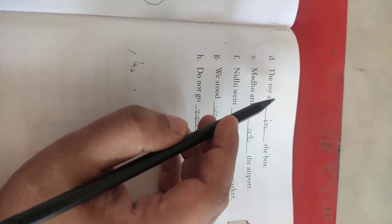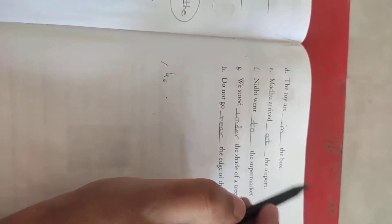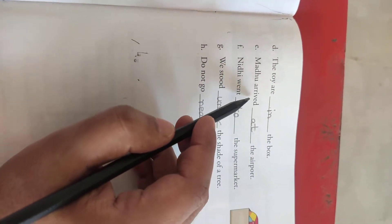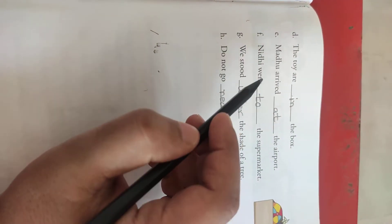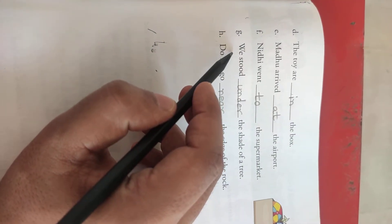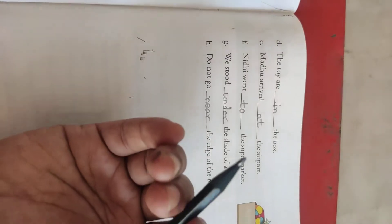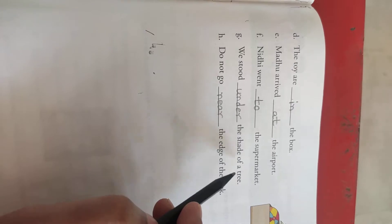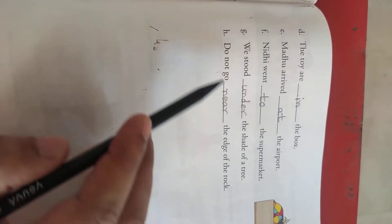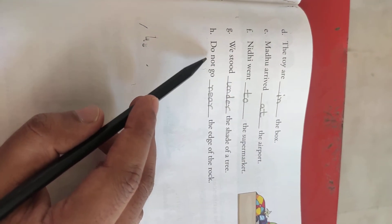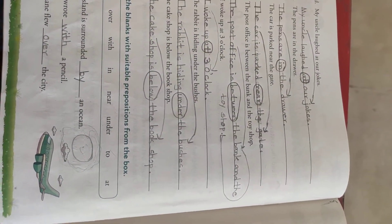On page number 47: 'The toys are in the box.' 'Madhu arrived at the airport.' 'Nidhi went to the supermarket.' 'We stood under the shade of a tree.' Under means below — we stood under the shade of a tree. 'Do not go near the edge of the rock.' Near means close by. In this way we have seen prepositions. Thank you, children.